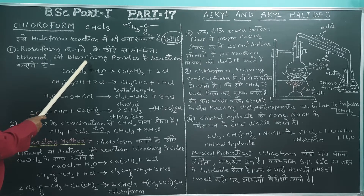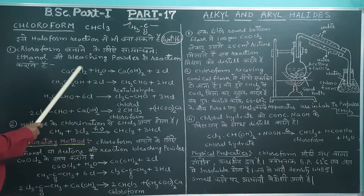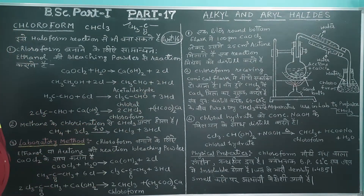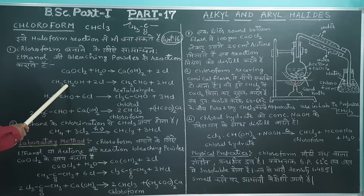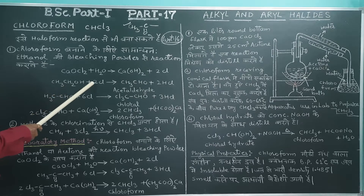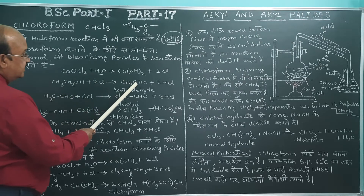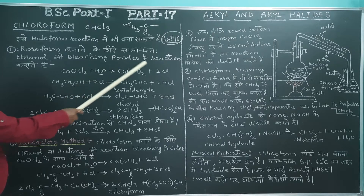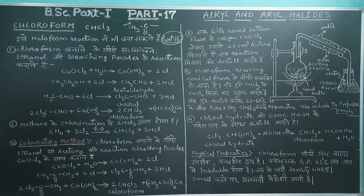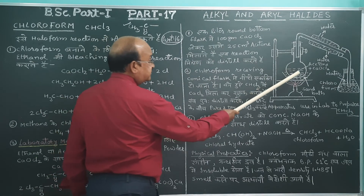Here we are making chloroform using ethanol plus bleaching powder. What happens is that when bleaching powder is dissolved in water, chlorine in the elemental/atomic state is produced. This elemental Cl, when it reacts with ethanol, results in removal of 2HCl and formation of acetaldehyde. Again repeating: when CaOCl₂ is dissolved in water, formation of Cl in the elemental state occurs.